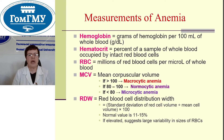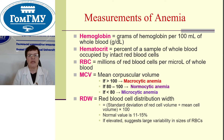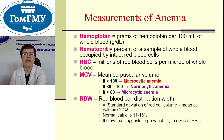Measurements of anemia: hemoglobin and hematocrit. Hematocrit is the percent of a sample of whole blood occupied by intact red blood cells. Red blood cell mean corpuscular volume and red blood cell distribution width. If mean corpuscular volume is more than 100, it is macrocytic anemia. If it is less than 80, it is microcytic anemia, and if mean corpuscular volume is from 80 to 100, it is normocytic anemia.